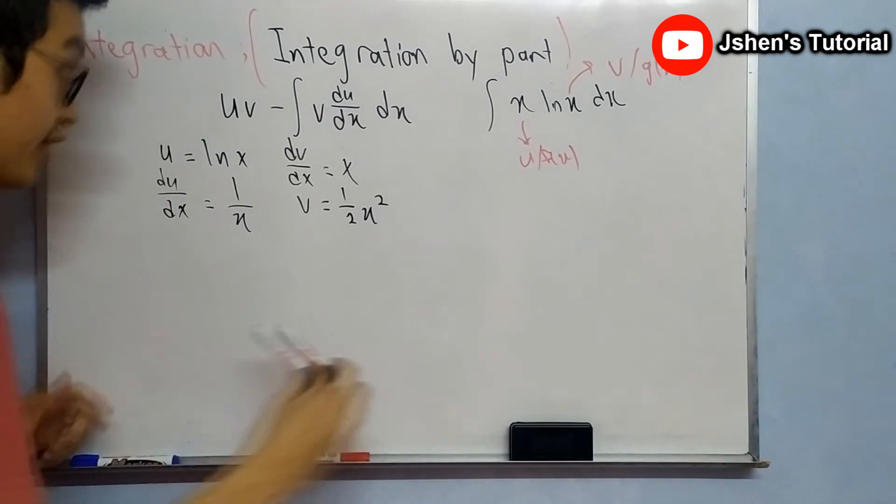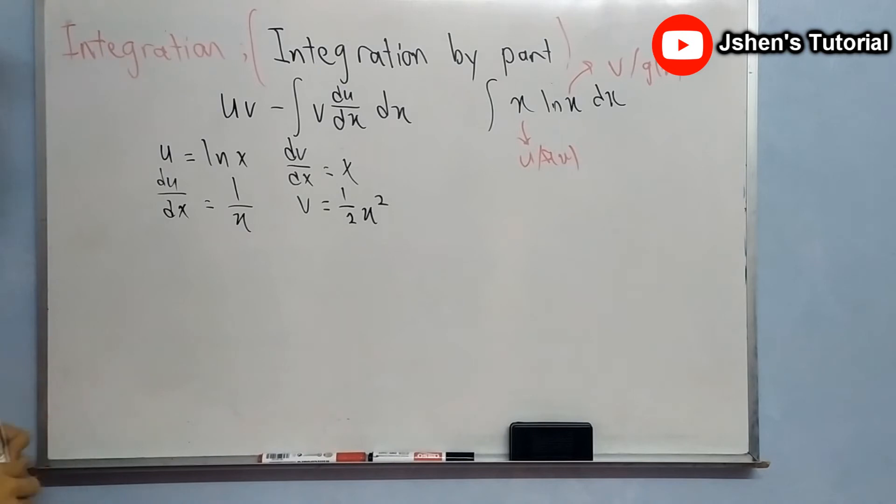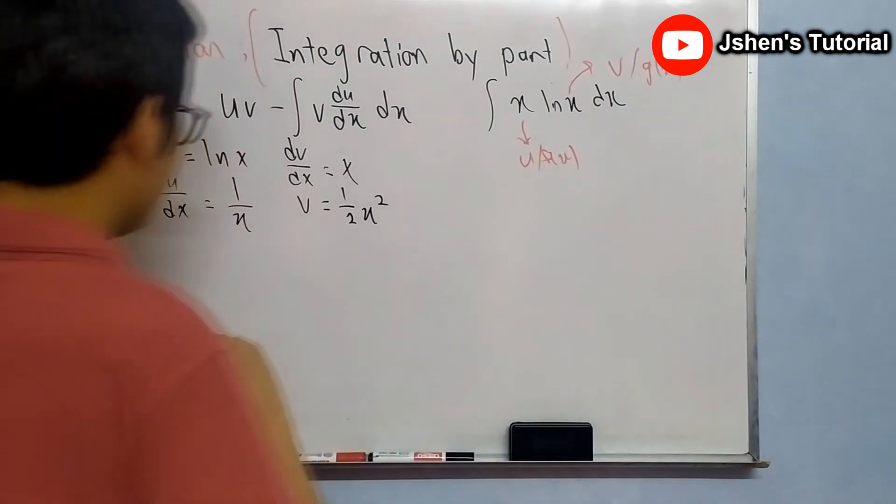Now we apply the integration by parts formula: uv minus integral of v du/dx. Okay.